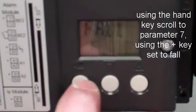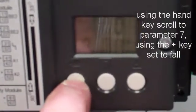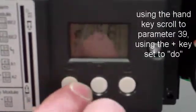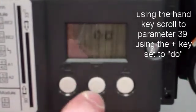Using the Hand key, scroll to Parameter 7 and set to Fall using the Plus key. Scroll to Parameter 38 and set to Fall. Scroll to Parameter 39 and set to Do.